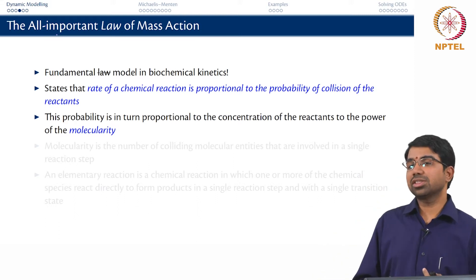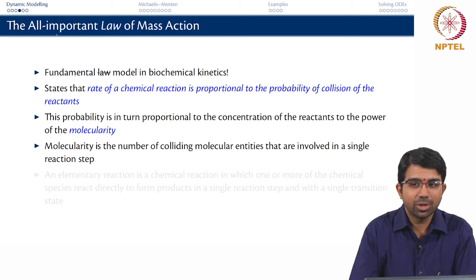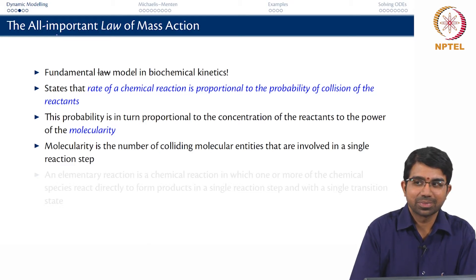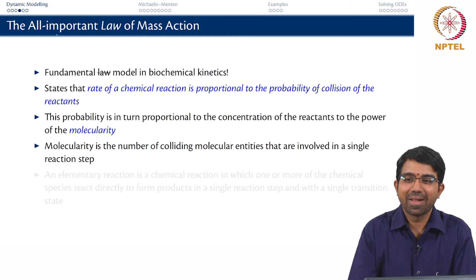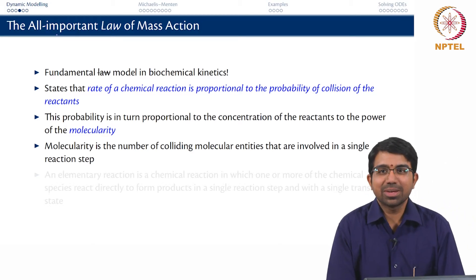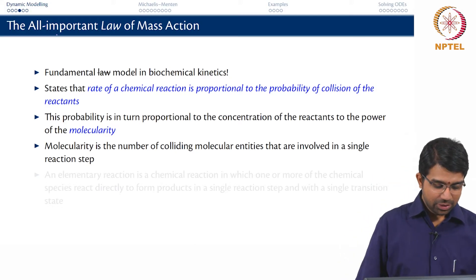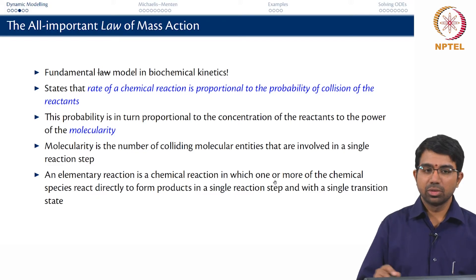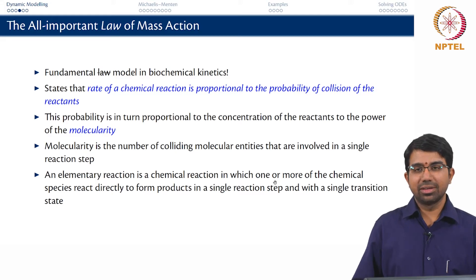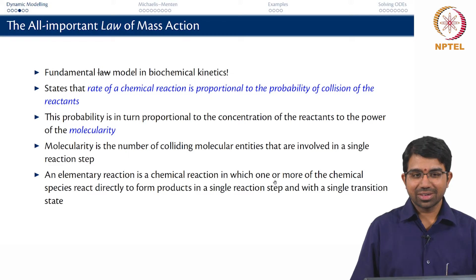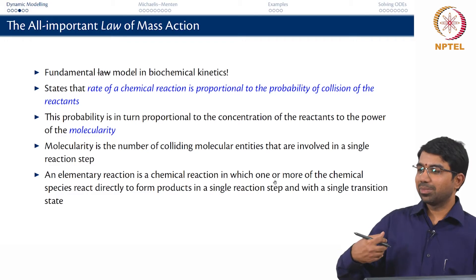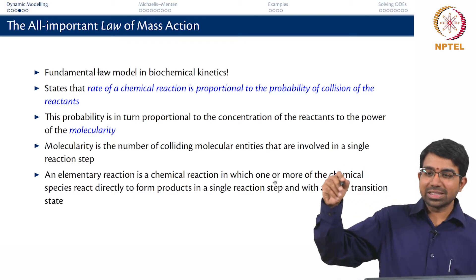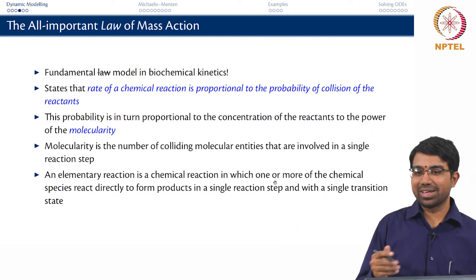This probability is in turn proportional to concentrations to the power of molecularity, given an elementary reaction. Molecularity is the number of colliding molecular entities in a single reaction step. An elementary reaction is a chemical reaction in which one or more chemical species react directly to form products in a single reaction step with a single transition state and no other intermediates. For a reaction A + B ⇌ C, the rate of the forward reaction is k⁺·A·B and the reverse reaction is k⁻·C².